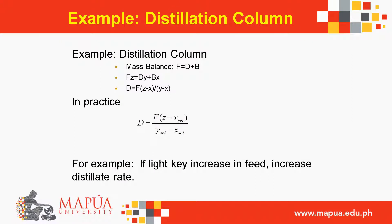Another example — distillation column mass balance: F = D + B, F·z = D·y + B·x, so D = F·(z − x)/(y − x). In practice, D = F·(z − x_set)/(y_set − x_set). For example, if the light key increases in the feed, the distillate rate will increase.